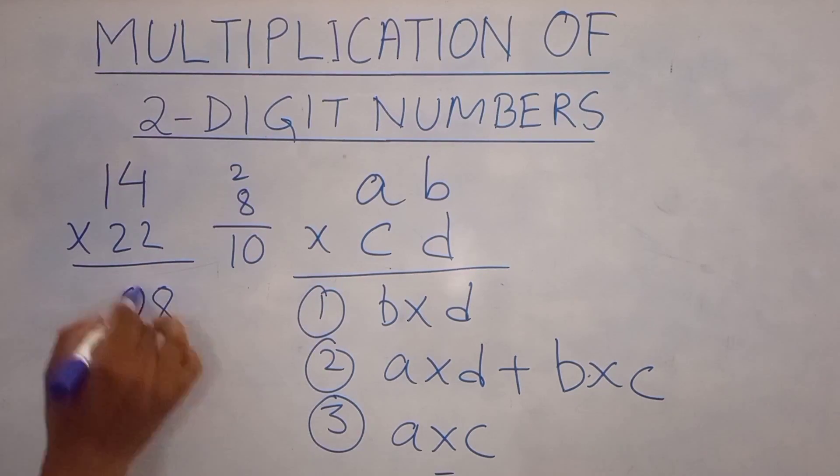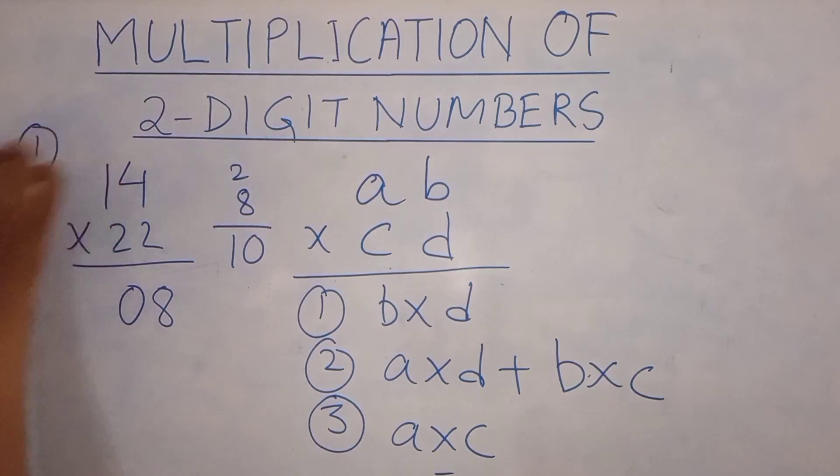So we'll write the 0 here and keep the 1 here. And lastly A into C: 2 into 1 is 2 and 2 plus 1 is 3. So the answer is 308.